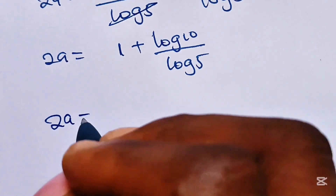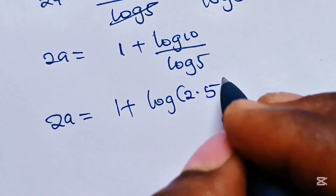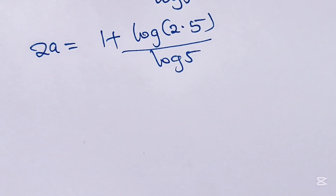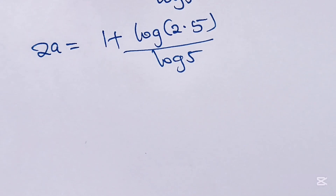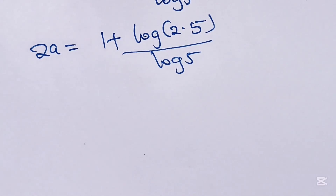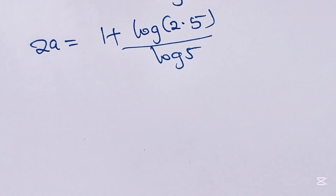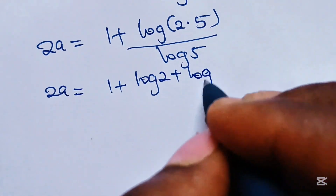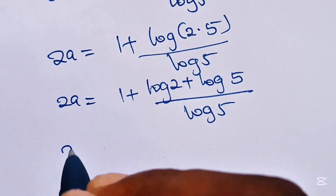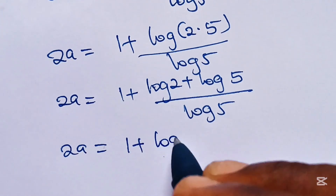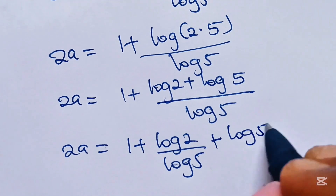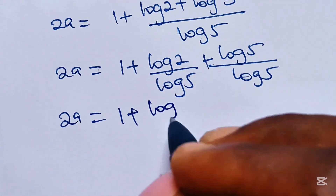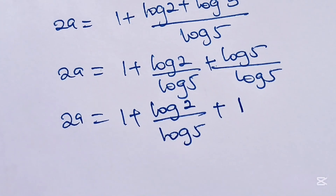Now we have 2a equal to 1 plus log 10, and log 10 is the same as log 2 multiplied by log 5, divided by log 5. If this is your first time here, please click the notification bell so you don't miss our daily uploads. So 2a equals 1 plus log 2 plus log 5, all divided by log 5. We can split this as 1 plus log 2 divided by log 5, plus log 5 divided by log 5.